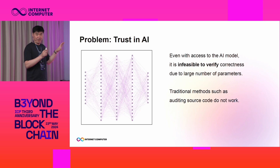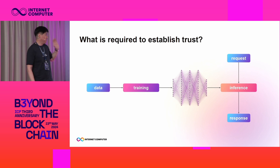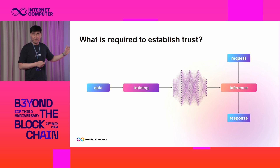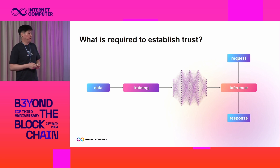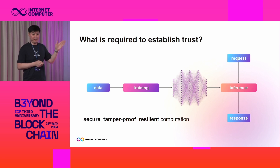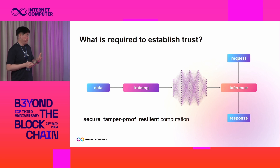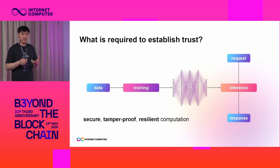So this is the problem. Now let's think how a solution could look like. This is a simplified diagram of AI training and inference. There is a training process — it takes input data, produces a model, and then this model is used by an inference process to answer requests from the user. Conceptually, in order to trust it, we need some guarantee that every step works as intended, that no one has tampered with these steps. In other words, we are looking for some way of secure and tamper-proof computation. And if there was such computation, then maybe we can solve this problem.